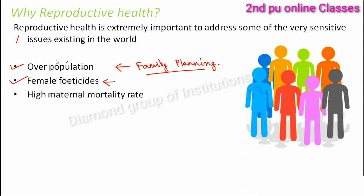High maternal mortality rate is another issue. Maternal mortality rate is the number of females dying while delivering. Compared to the past, it has at least reduced — fewer females die during delivery now. But earlier, a lot of females used to die while giving birth or due to pregnancy complications. The maternal mortality rate used to be really high. Now it has improved, but in different parts of the world you will still find areas where the maternal mortality rate, often termed as MMR, is still very high.